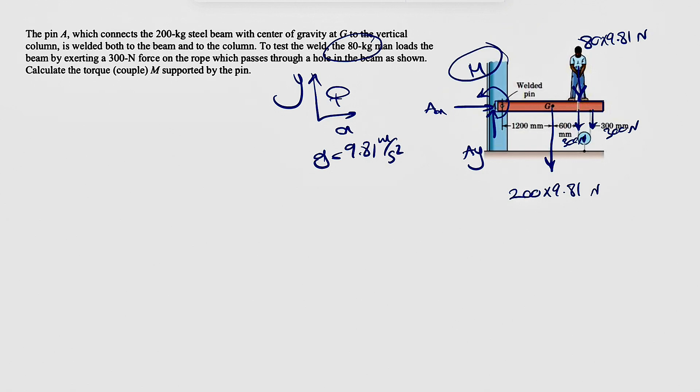And we're interested in the moment M or the couple at point M. And if we just do sum of all moments about point A equals zero, since we are in equilibrium, we should be able to find the M. So first of all we have the M, and if we just do sum of all forces in X direction, we'll see that there is no X because that's the only force in X direction.